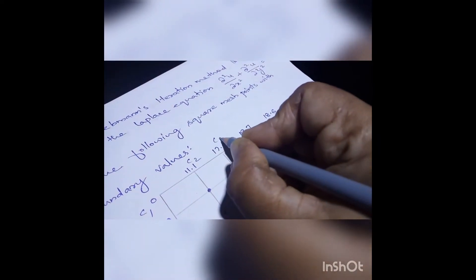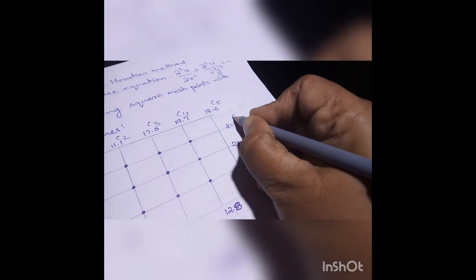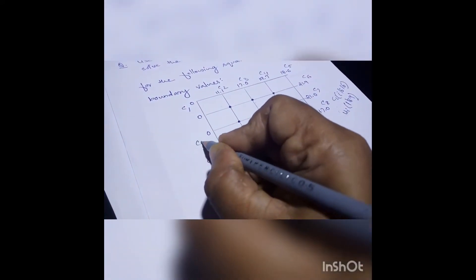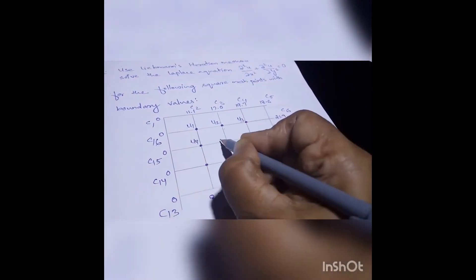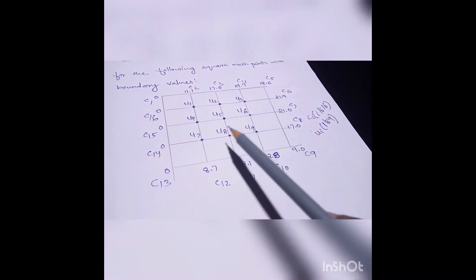Now we label the boundary points as c1, c2, c3, c4, c5, c6, c7, c8, c9, c10, c11, c12, c13, c14, c15, and c16. The interior mesh point values are labeled U1, U2, U3, U4, U5, U6, U7, U8, and U9. We write both the c terms and the u terms into the grid.